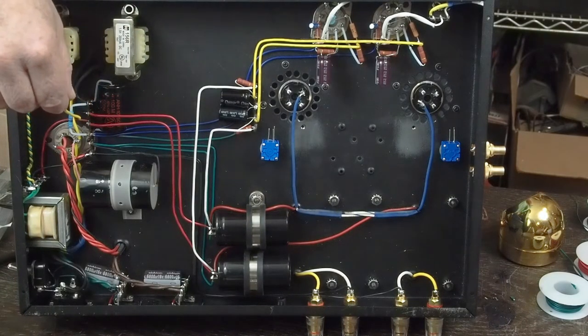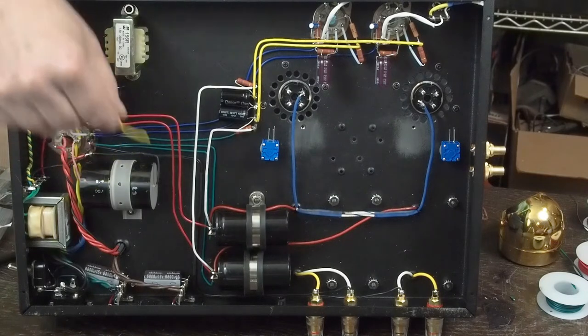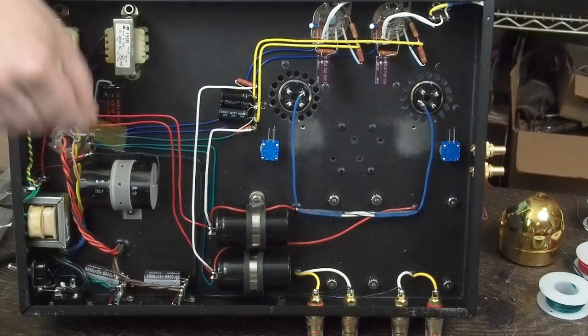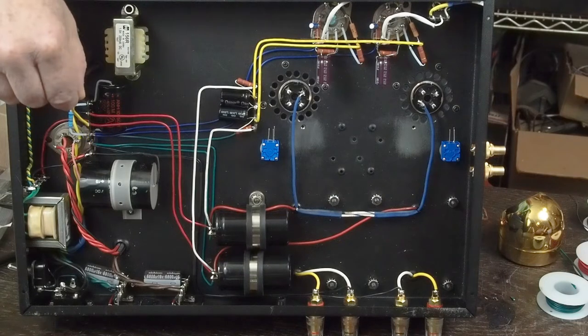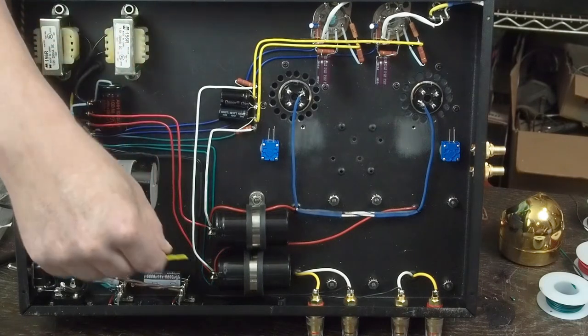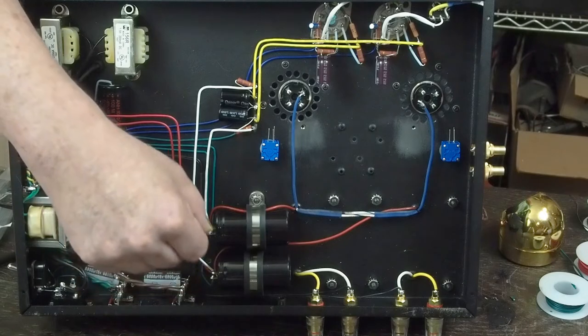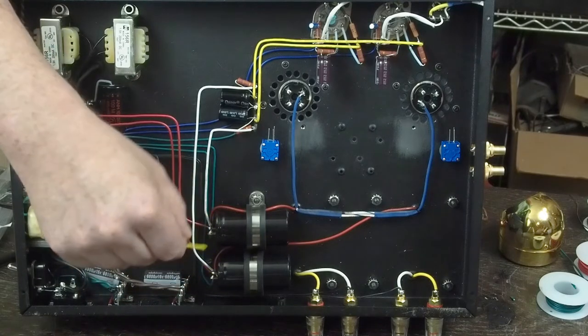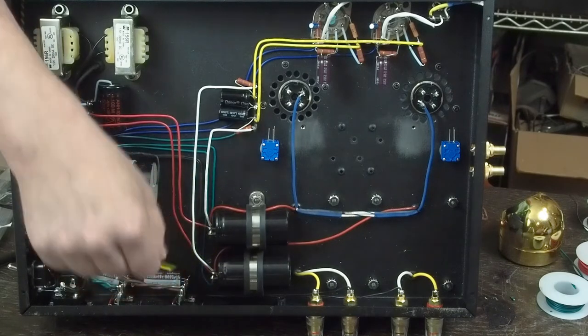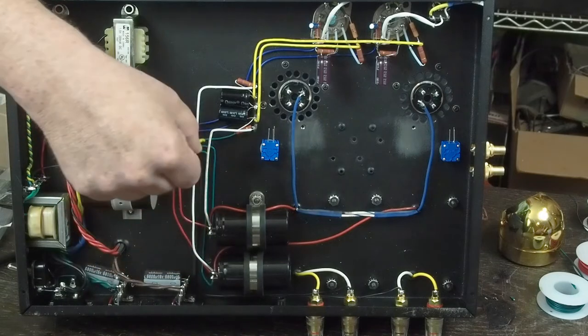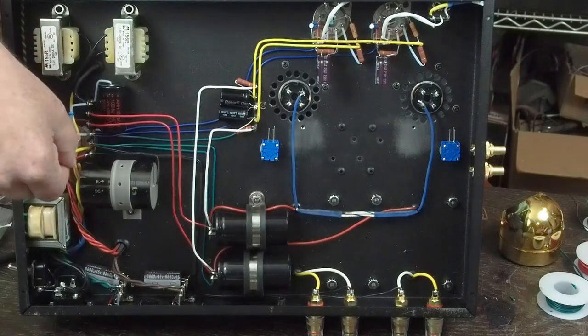We've got, we've done all this B plus power supply stuff and we tested it. So now I've wired up the B plus over to these two reservoir caps. Got the grounds, individual grounds that come over here with these green wires to our star ground.